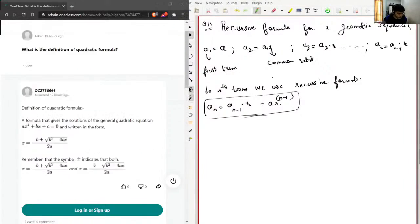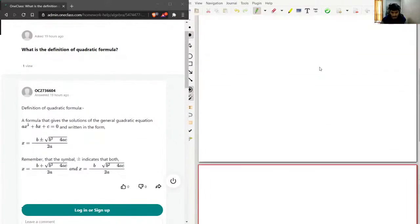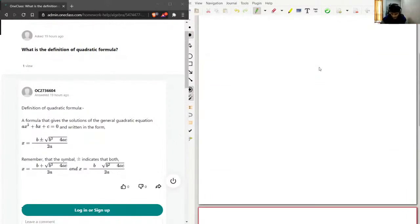So for the second question, I'll just add one page here and I'll write with the red color now. This is our question number two. It is asking what is the definition of a quadratic formula.